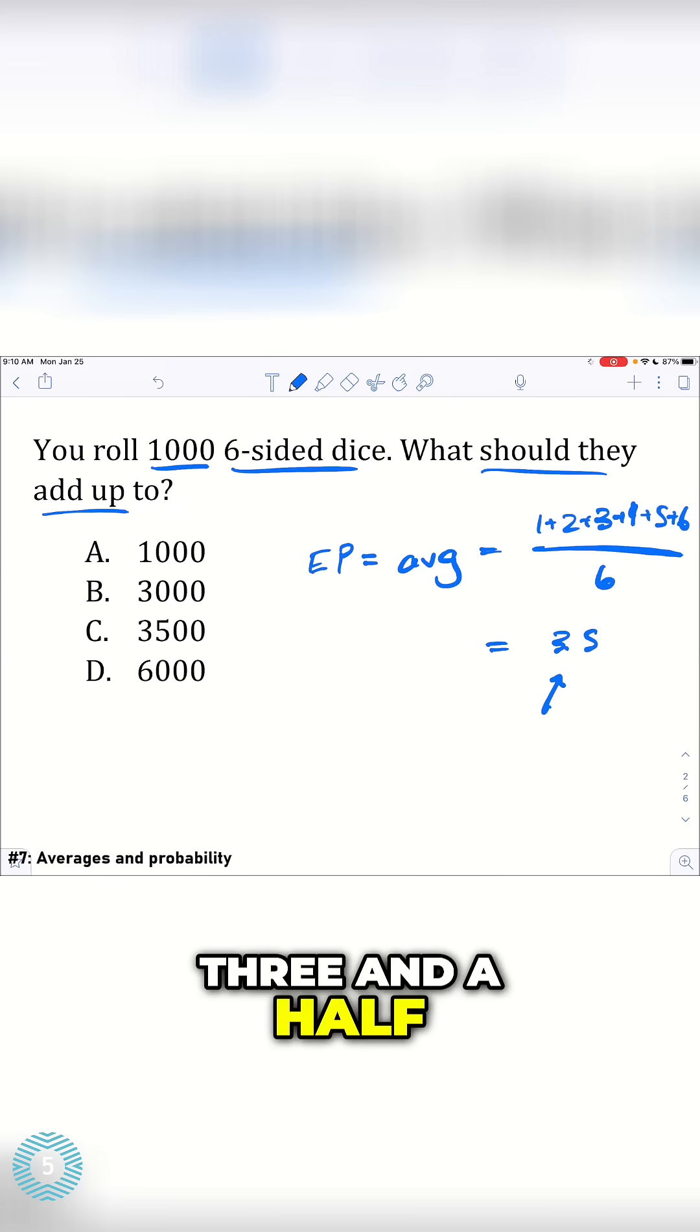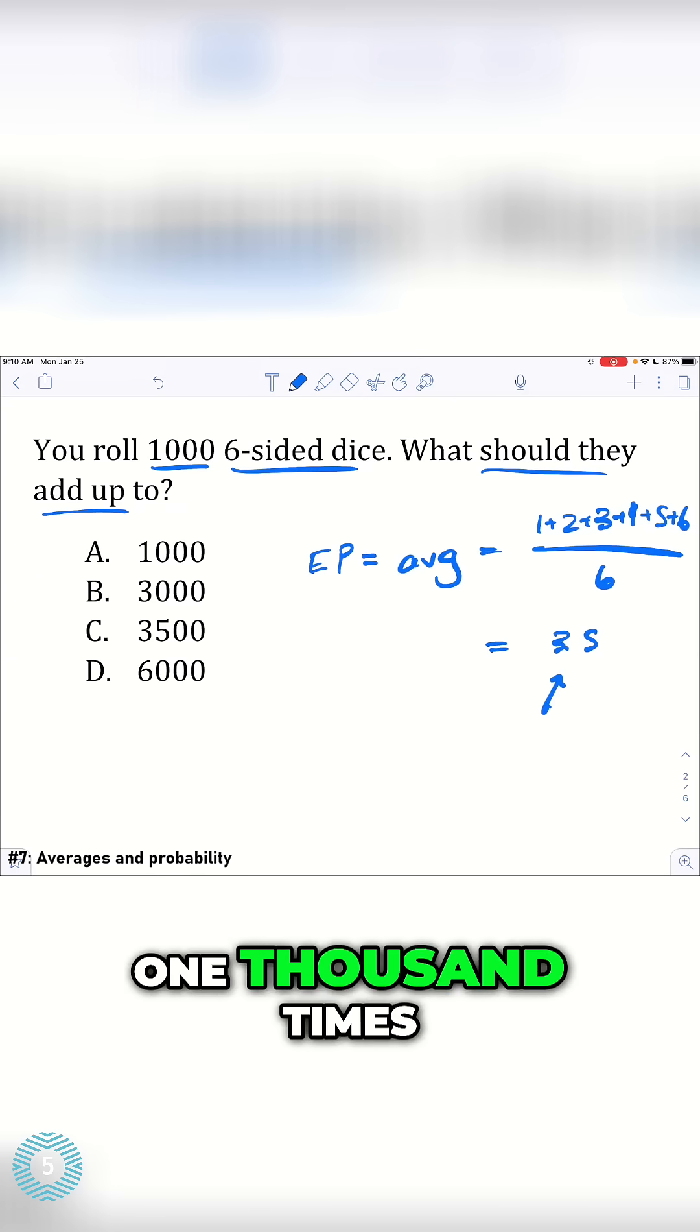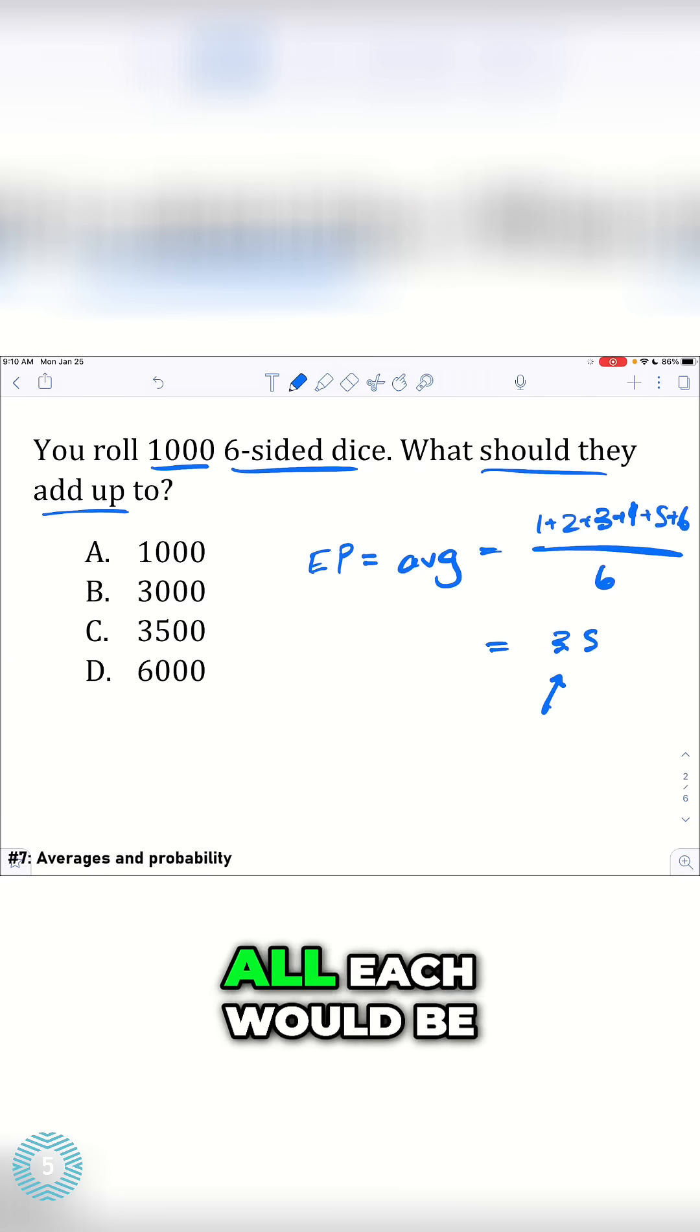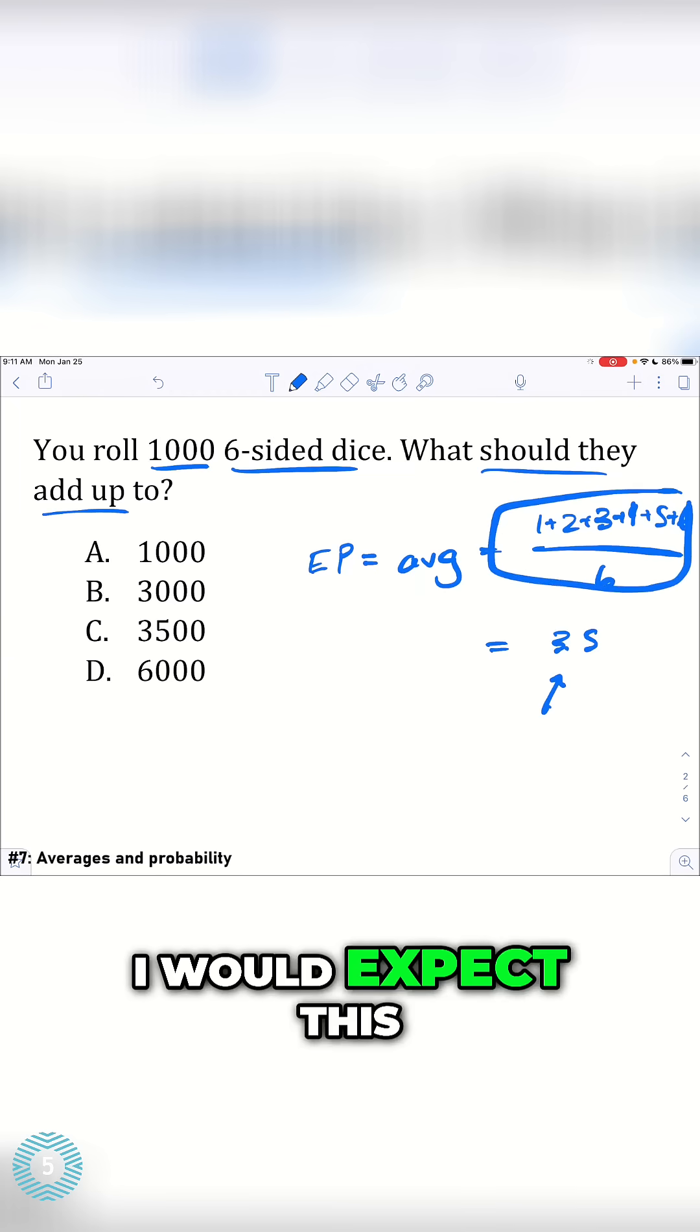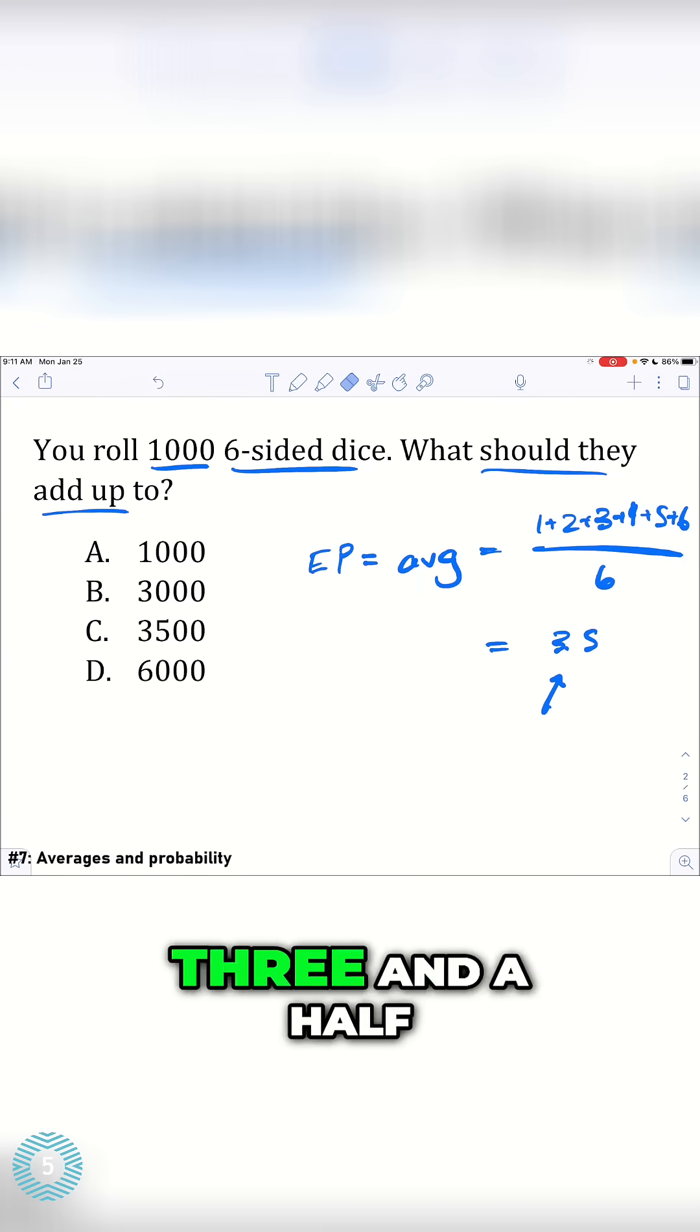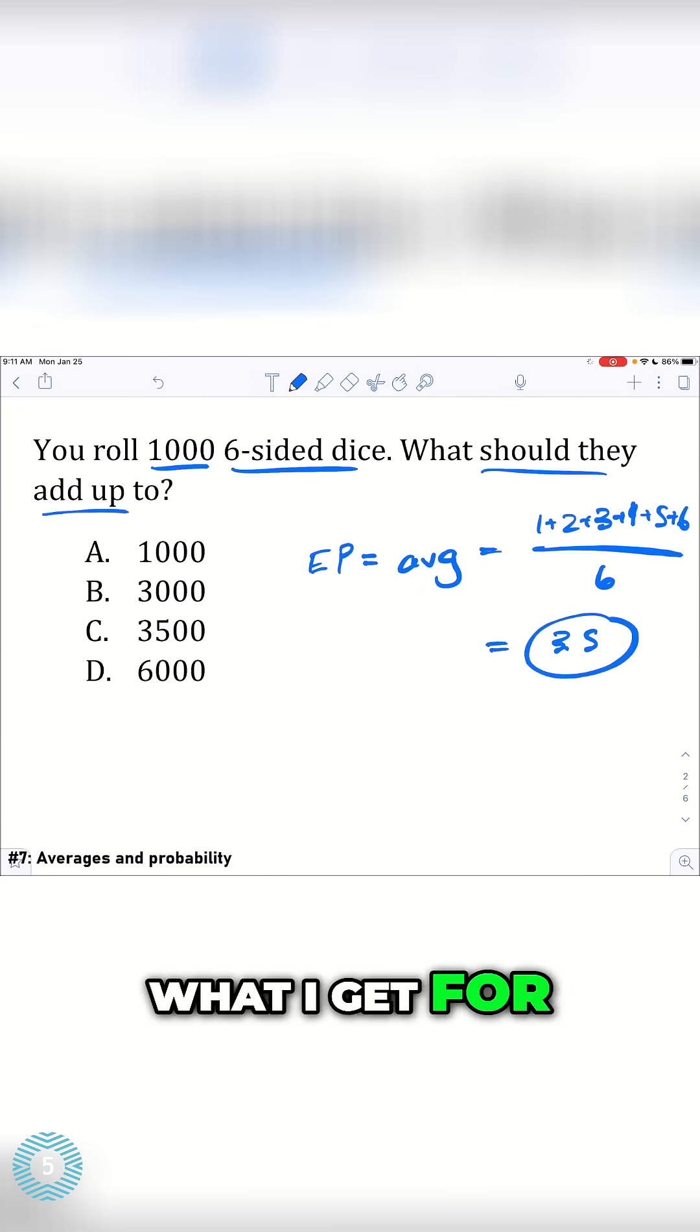And again, you can't actually roll 3.5, but if you rolled 1,000 times, the average, like you would get a 1, you'd get a 2, you'd get a 3, 4, 5, and 6, all each would be, each of them would be 1 sixth of the time. So if I rolled 6 times, I would expect this type of behavior, and my average would be 3.5.